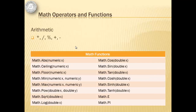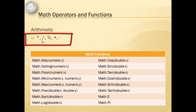The basic arithmetic operators are star or asterisk for multiplication, slash for division, percent for modulo division, plus for addition, and minus for subtraction.